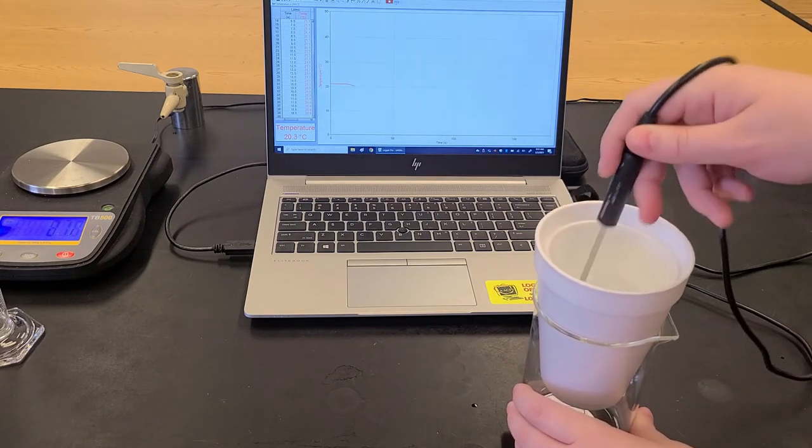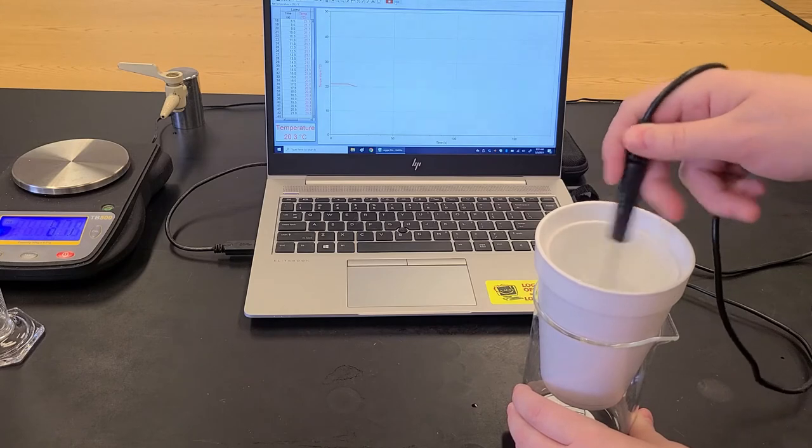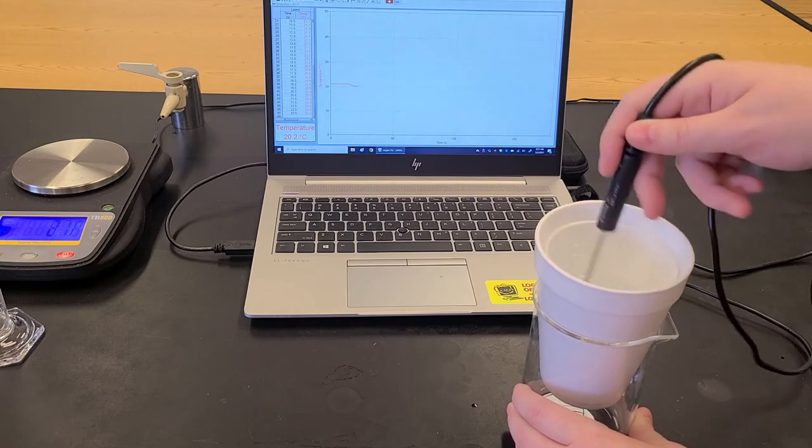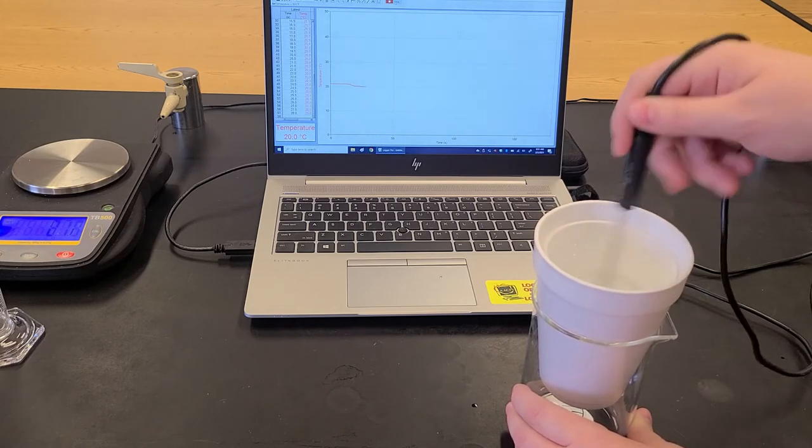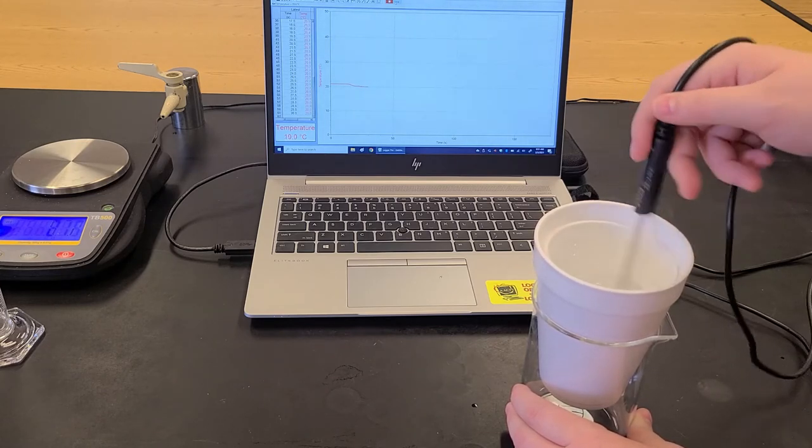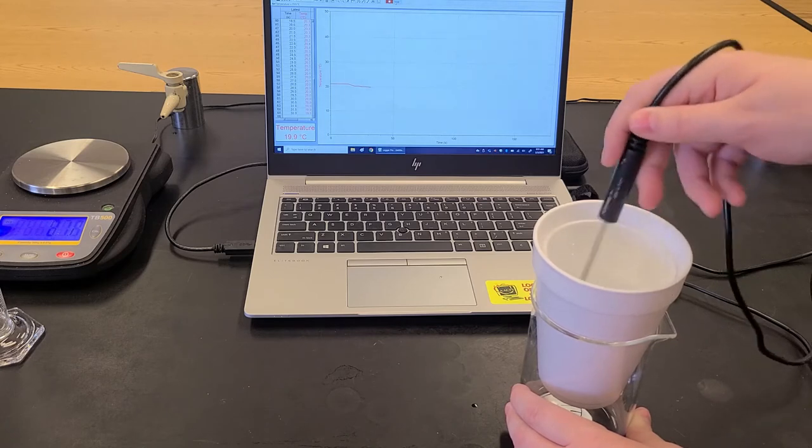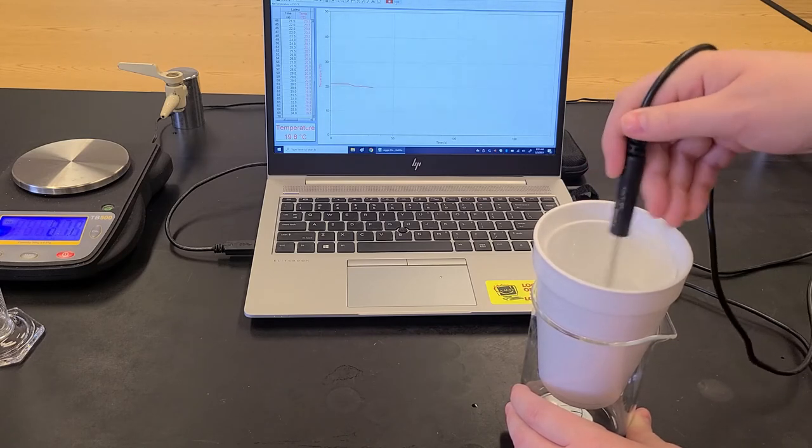So here we see that whenever we add this sodium chloride that the temperature decreases. And that's because this process is absorbing heat. The process of dissolving is absorbing heat away from the water, which makes the water temperature go down.